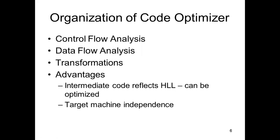The organization of the code optimizer: first you perform control flow analysis, then data flow analysis, then transformations. After doing these three processes, your code will be optimized. Also, your code should be machine independent.